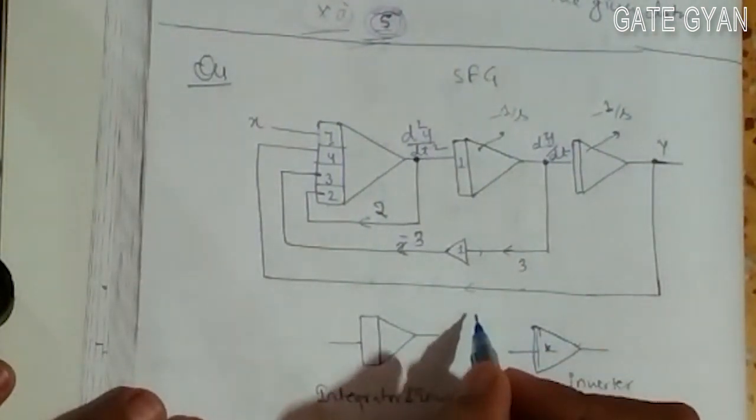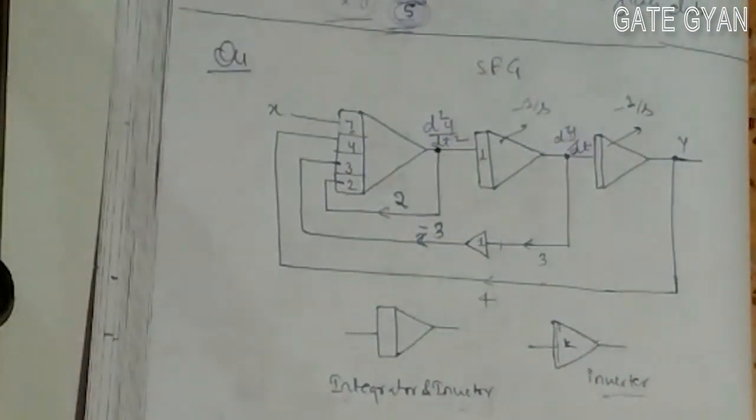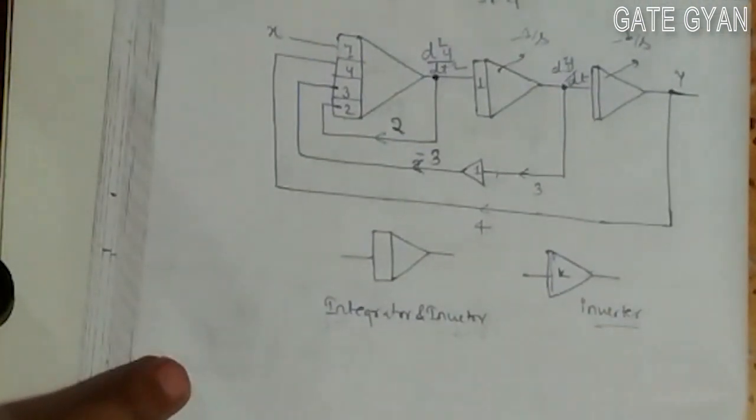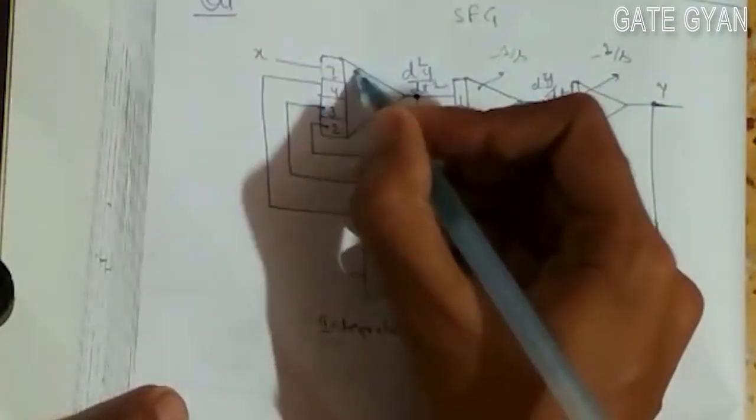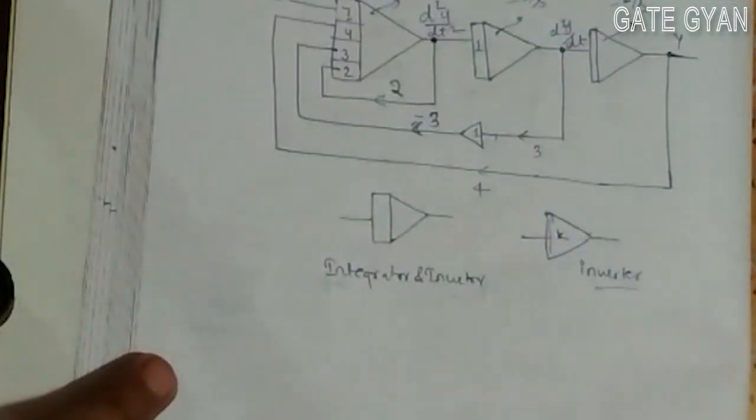This is getting multiplied with 4. Now I will replace all these terms by drawing its SFG.